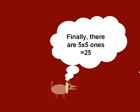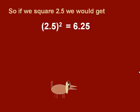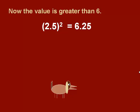Finally, there are 5 times 5 ones. So now we add the numbers 400 plus 200 plus 25, which gives us 625. So if we square 2.5, we would get 6.25. So now we've come up with a value greater than 6.